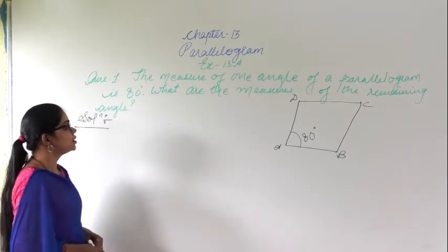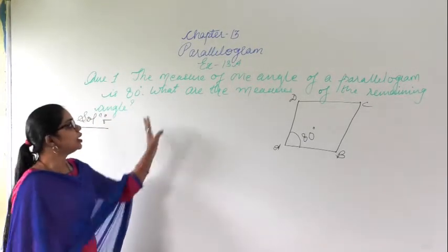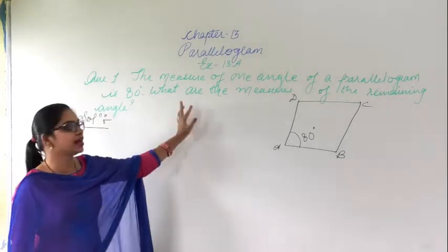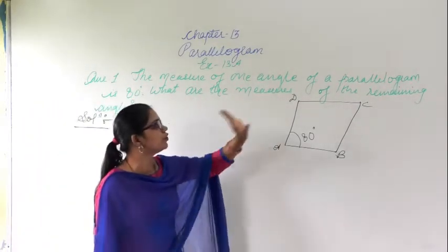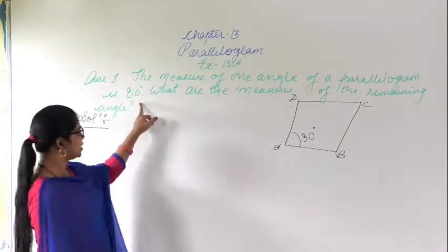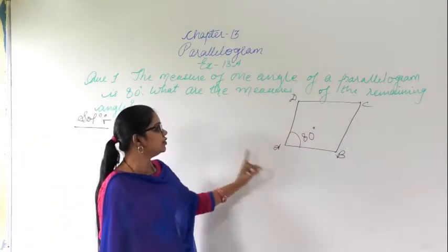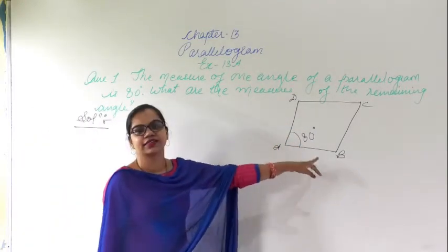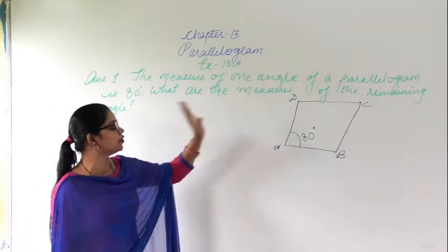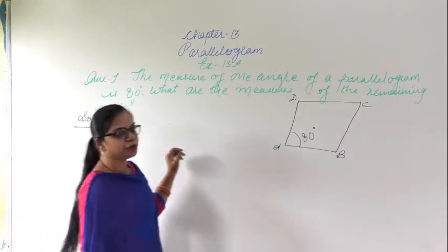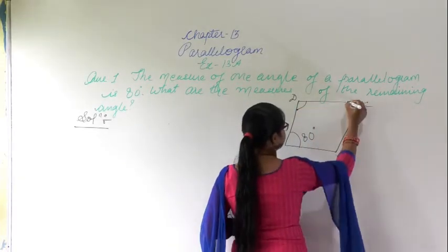Good morning. This is chapter number 13, Parallelogram, and this is exercise 13A. The first question is: the measure of one angle of a parallelogram is 80 degrees. This is a parallelogram and one angle is given — angle A is given as 80 degrees. What are the measures of the remaining angles? We have to find out these remaining angles.